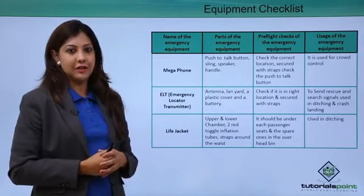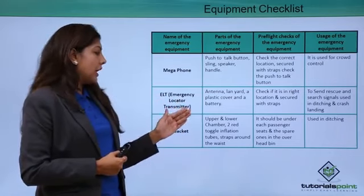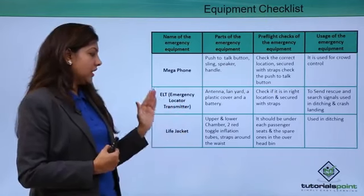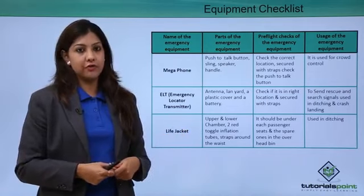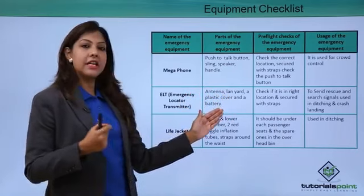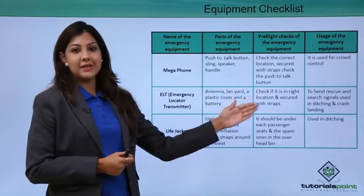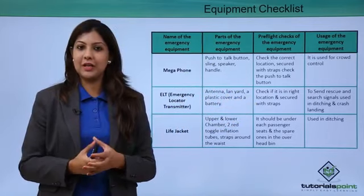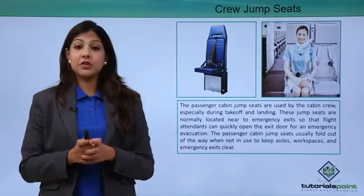The life jacket has an upper and lower chamber, two red toggle inflation pulls, and straps around the waist. Its location is under each and every passenger seat, and for crew it is under the jump seat. It is used in case of a ditching — you never use a life jacket in a land crash; it is always used when you have to go into water.